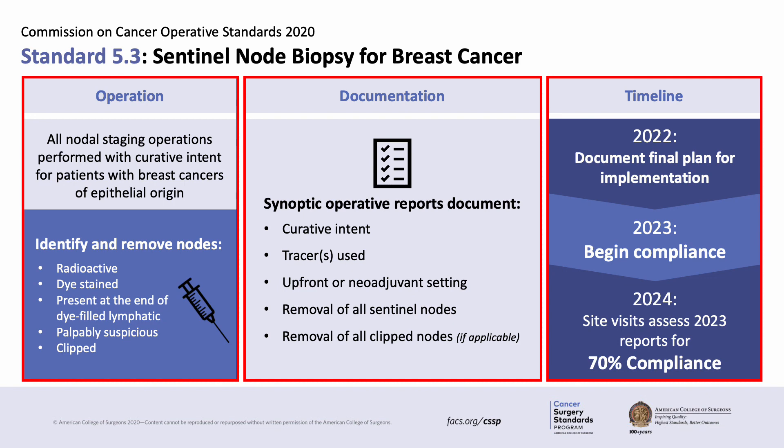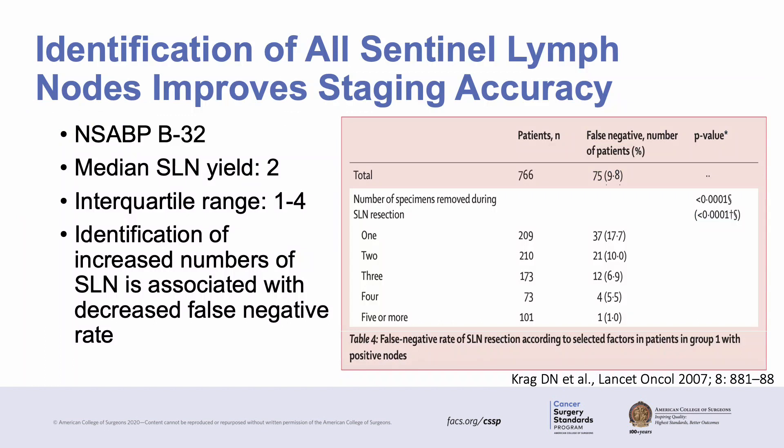We will now focus in detail on the operative aspect of this standard. In the NSABP B32 study, median sentinel lymph node yield was 2, with an interquartile range of 1 to 4. As you can see in the graph on the right, as sentinel lymph node yield went up, false negative rates went down, illustrating that identifying all sentinel lymph nodes improves staging accuracy.